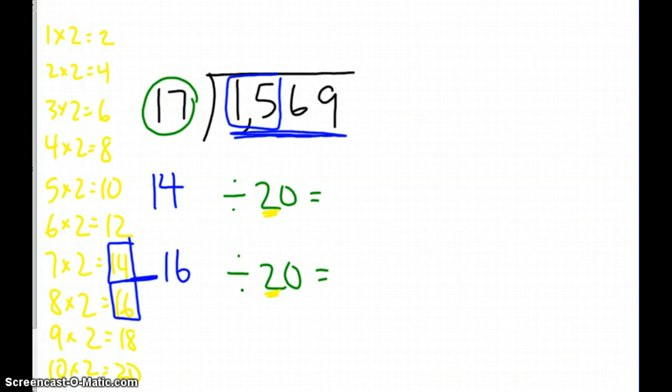Now, because in my dividend, 1,569, I use four digits, I need to make my dividend over here four digits also. So I'm going to fill in zeros.